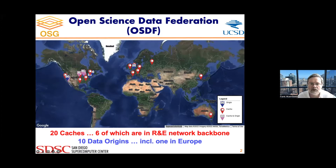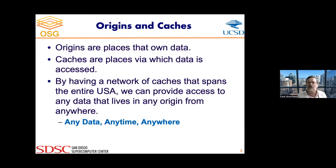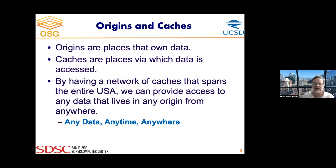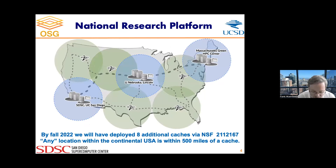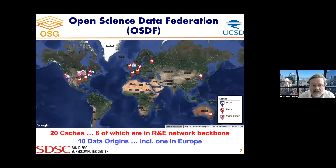It has two components: origins and caches. Origins are where data is resident — what we call a place that owns data. Caches are places by which data is accessed. By having a network of caches that spans the entire USA, we can provide access to any data that lives in any origin from anywhere. The goal ultimately is any data, anytime, anywhere.